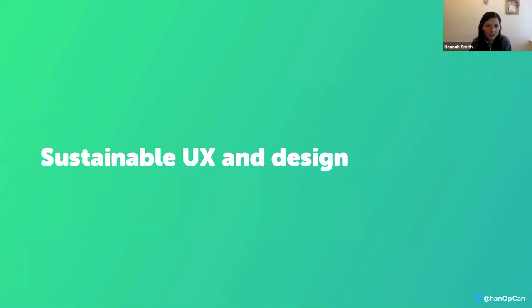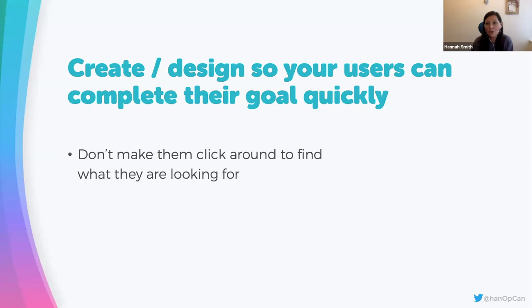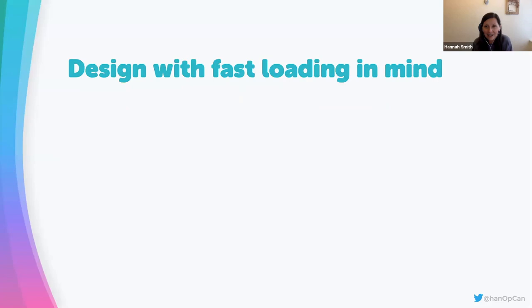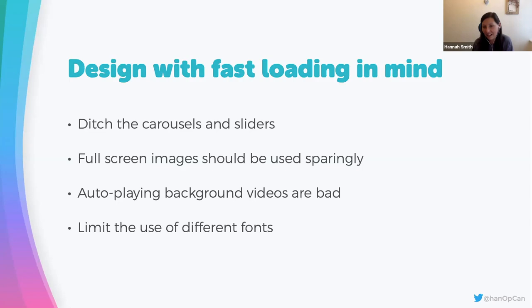I can't talk about content and the environment without briefly mentioning sustainable UX and design. If you're responsible for designing software, you save the planet a lot of pain if you design so users can complete their goal quickly — don't make people click around. There's a whole field of sustainable UX with conferences and resources if design is your area. Quick design takeaways: ditch carousels and sliders, use full-screen images sparingly, avoid auto-playing background videos, and limit the use of different fonts.